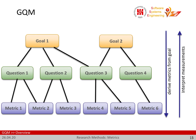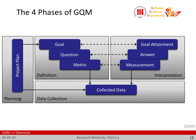To set up a GQM approach, there are typically four different phases. The first is planning — it's actually a larger endeavor, not something somebody just does in an afternoon. Then we need to define the goal, the questions, and the metrics. This is input to the data collection — why are we interested in this specific data? Any data not identified through this metric derivation is not of interest. This also gives us the basis for interpretation: we use the measurements to derive answers and finally attain our goal.